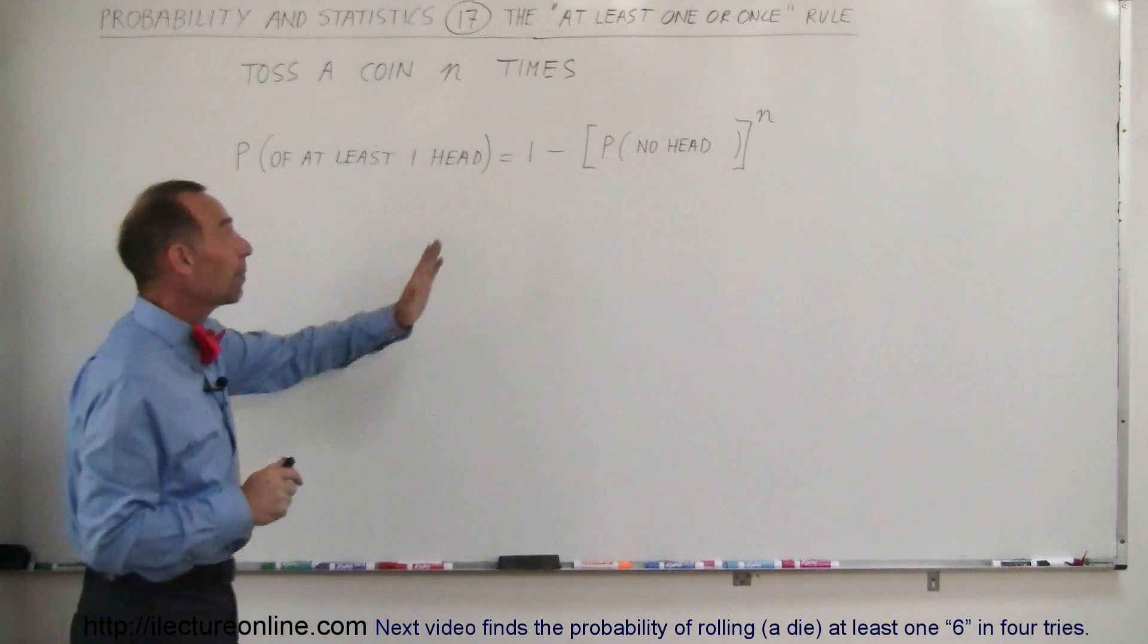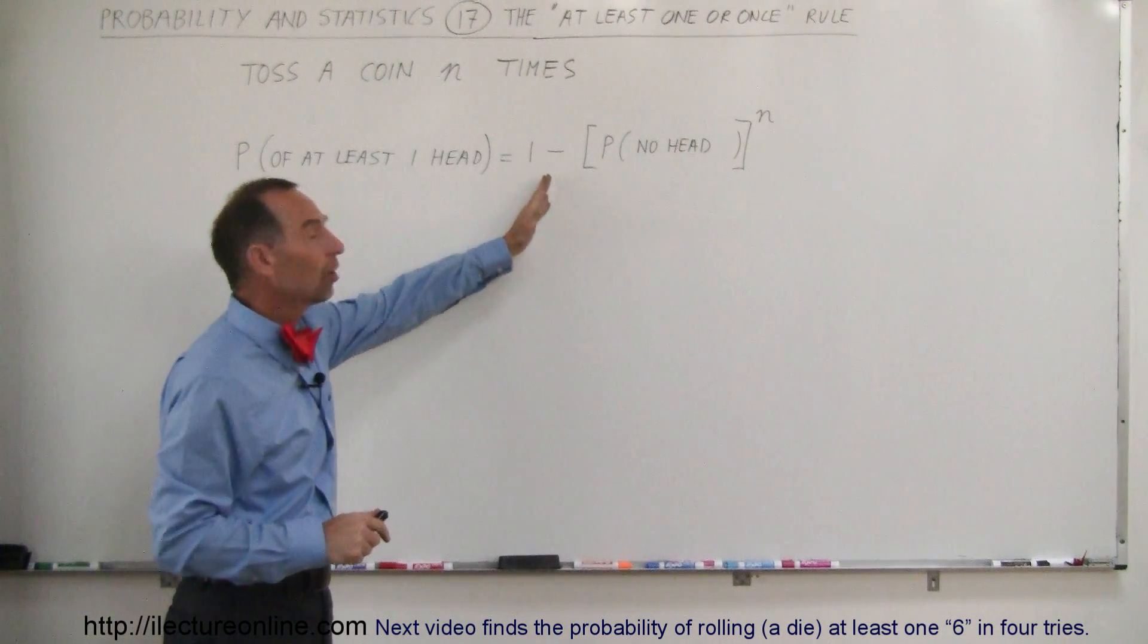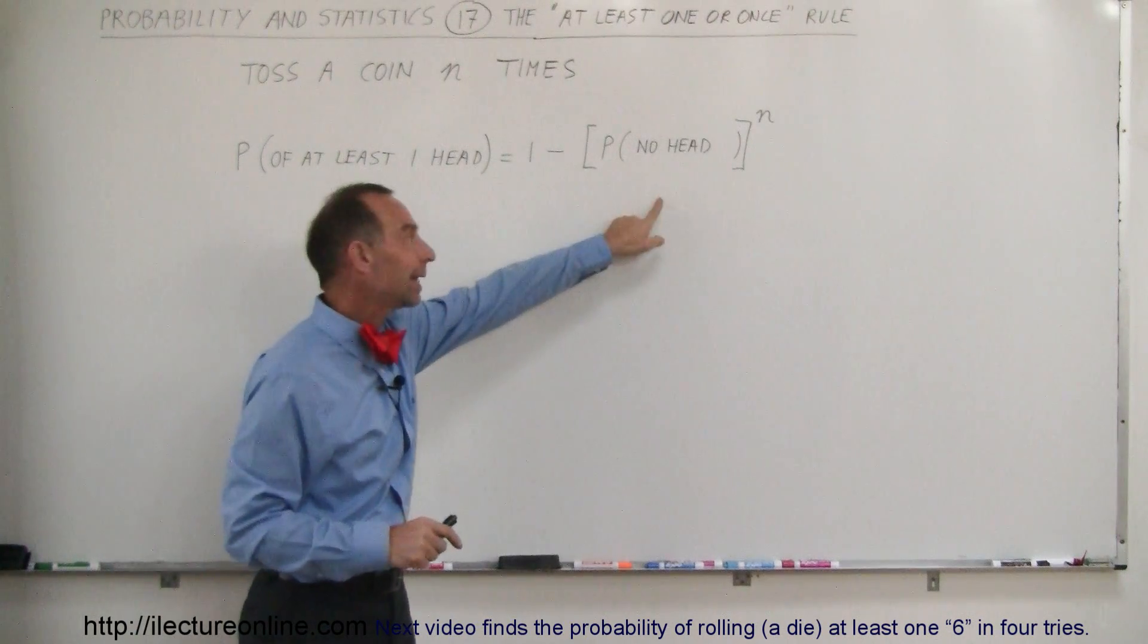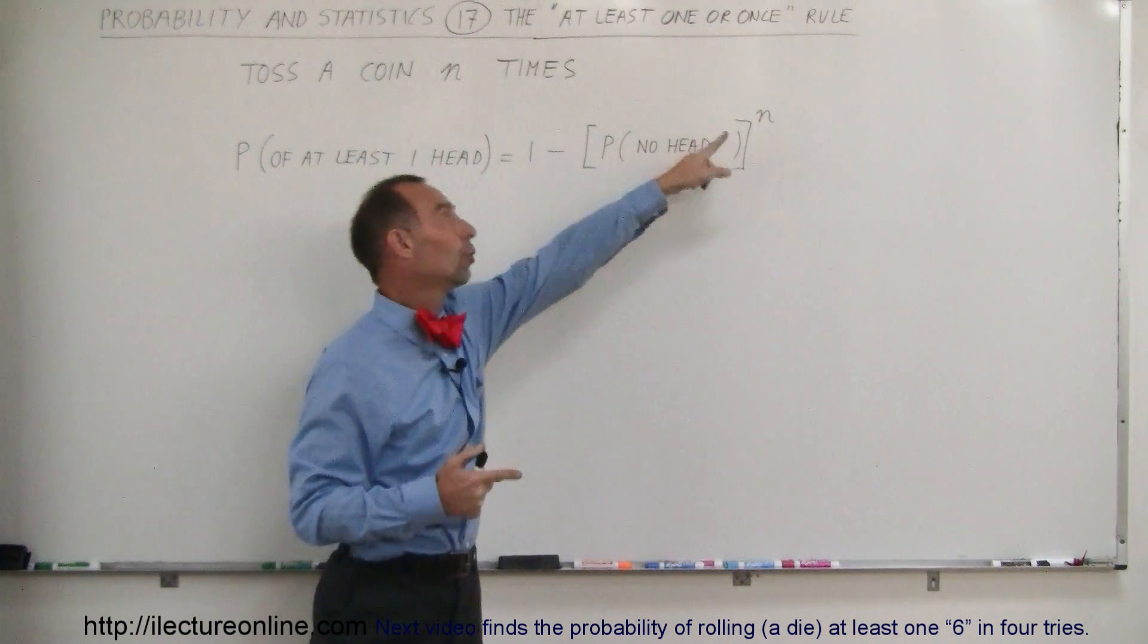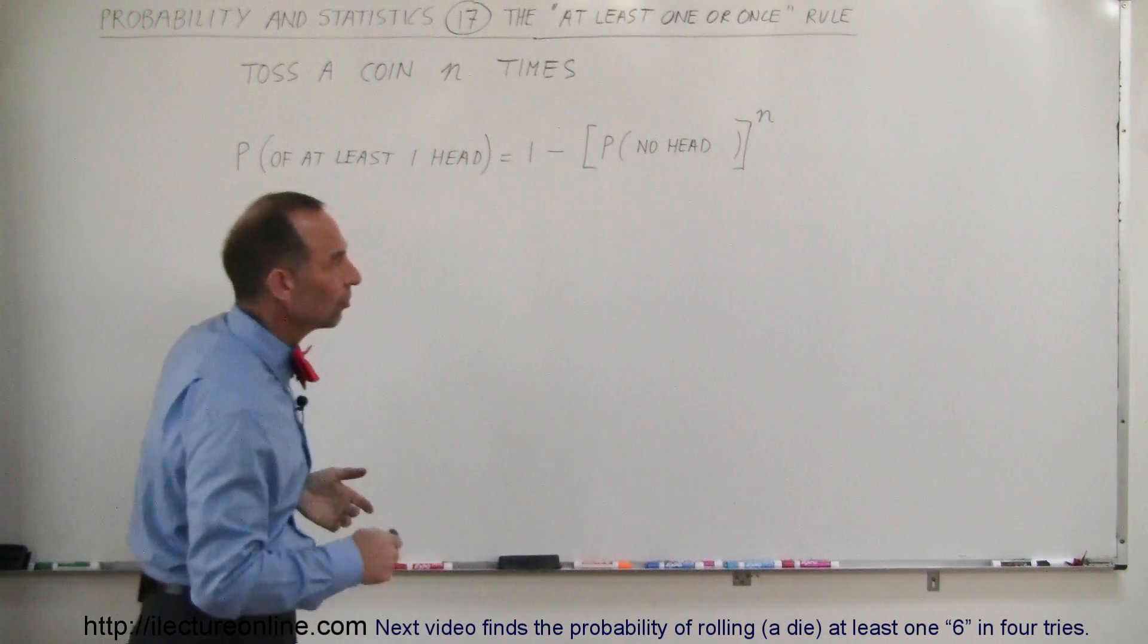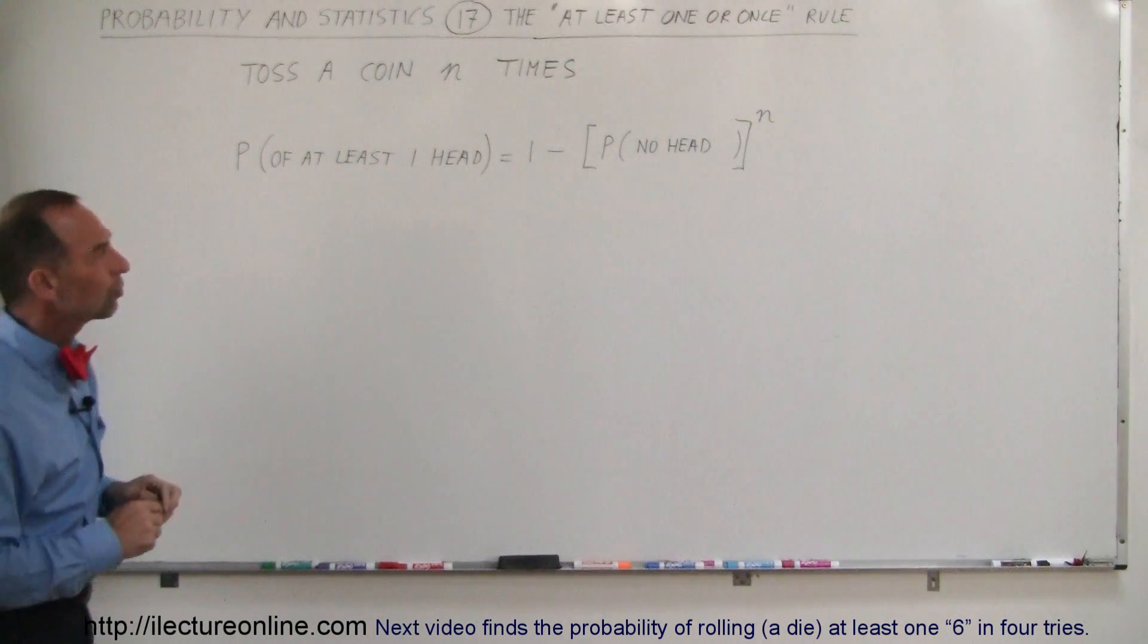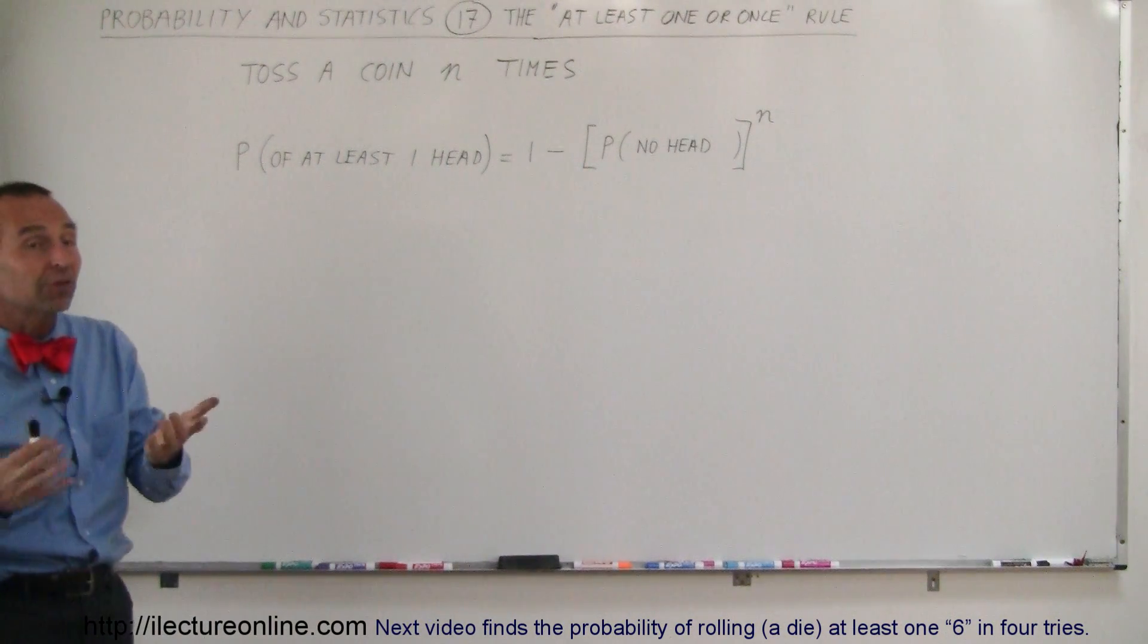And so the answer is here: you take the probability of one minus the probability that you will not get a head on any one toss, raised to the n power where n is the number of tosses. So it looks a little strange for the equation, but let's put some numbers on there.